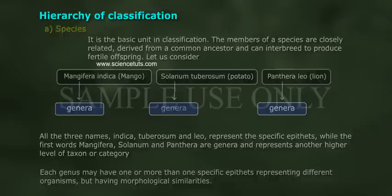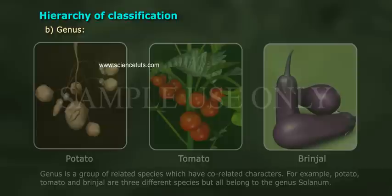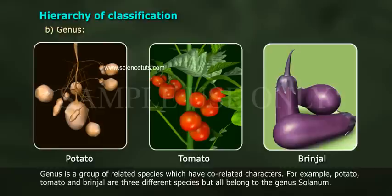Genus is a group of related species which have co-related characters. For example, potato,